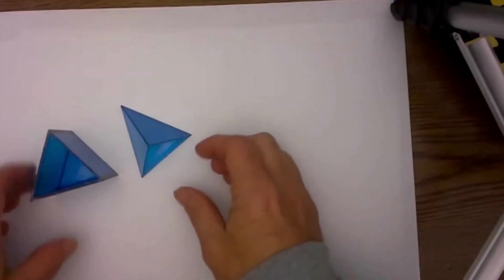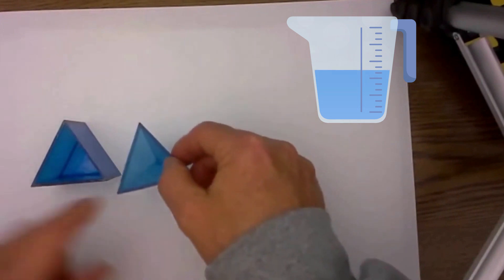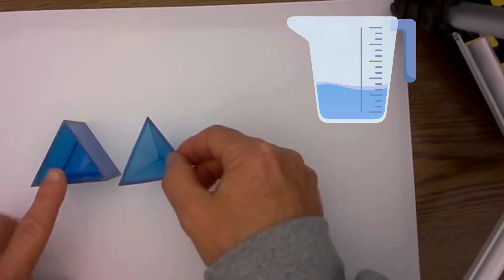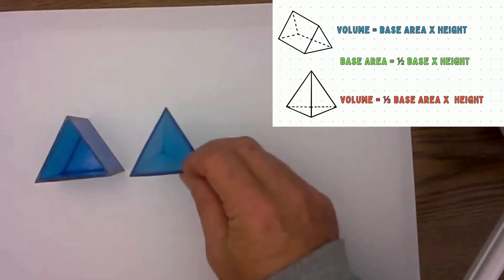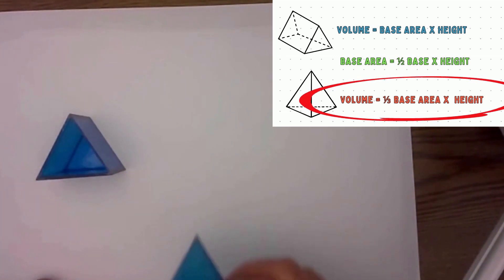What I would like to accomplish in this video today is to show you visually by filling this triangular pyramid and this triangular prism up with water and showing you how the triangular pyramid is one third the volume of the triangular prism.